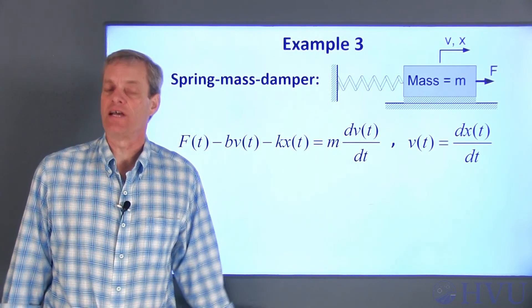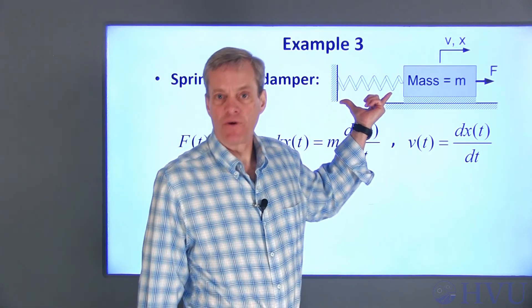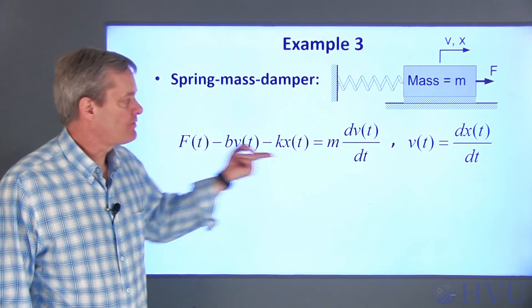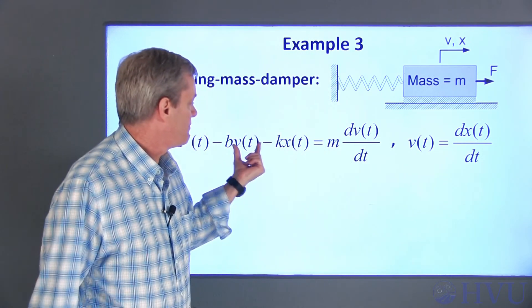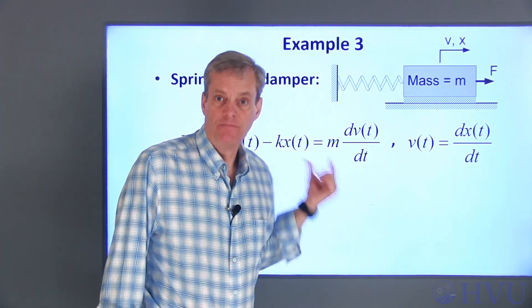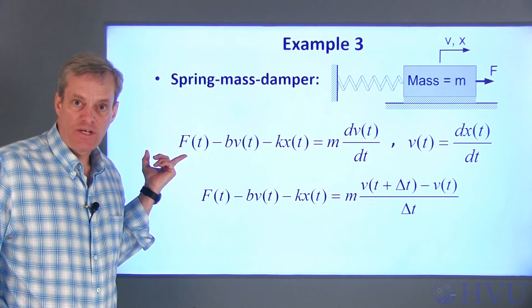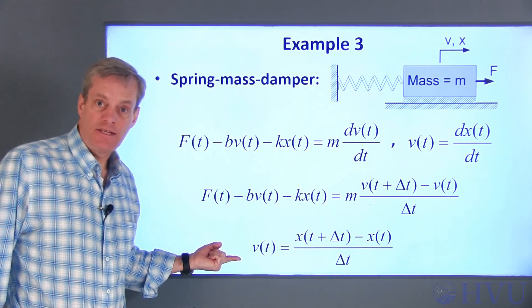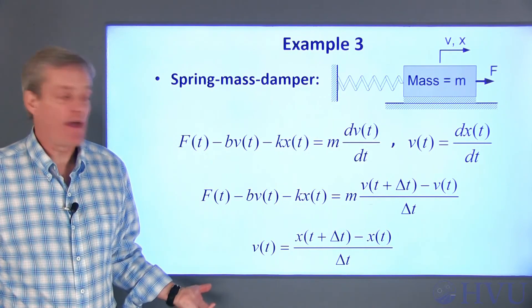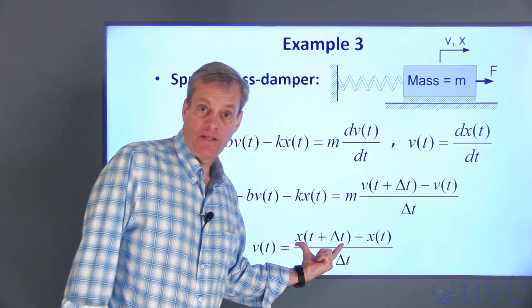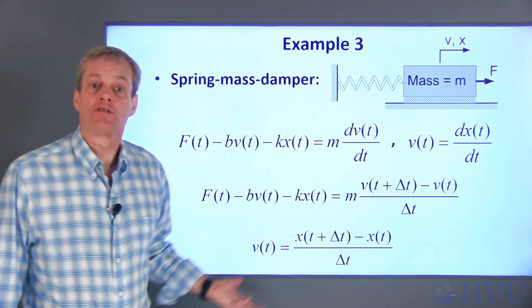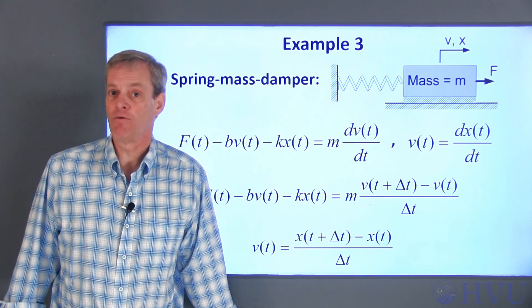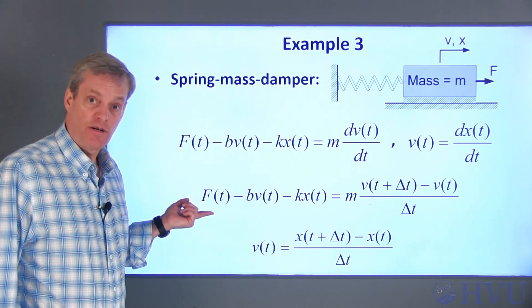Finally, let's look at the third example from the previous lecture, in which we added a spring to the system. For this example, the model consists of two differential equations in two unknowns: the mass's velocity and the spring's displacement. Replacing the derivatives in both equations with their approximations gives us expressions for velocity and displacement at time t plus delta t in terms of velocity, displacement, and applied force at time t. The solution approach with two equations is similar: we simply have two equations in our loop rather than one.